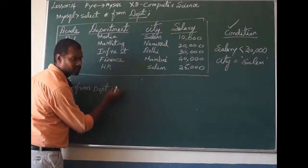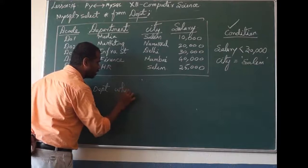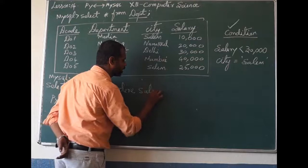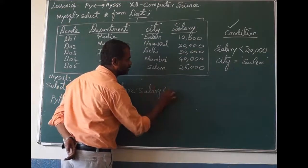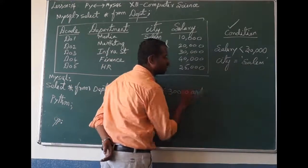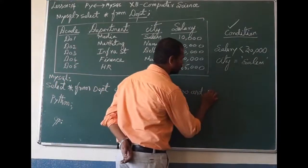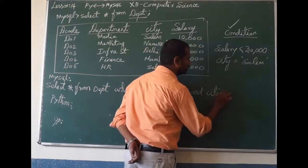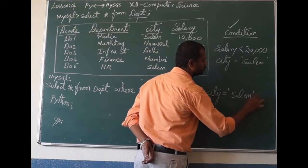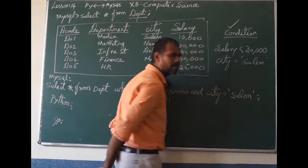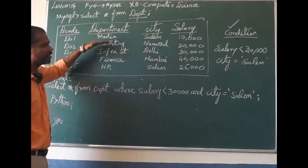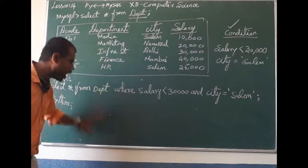For condition B, we have to write WHERE. So: WHERE salary less than 30,000, AND city equal to Salem. If you press enter, the output will appear. According to the condition, whichever lines satisfy it will come in the output.